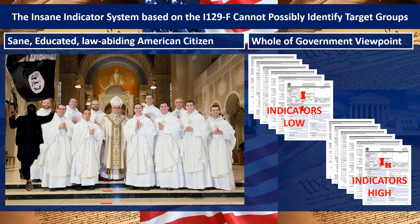On the left, Americans might look at a room and think: there's a group of clergy — maybe a bishop in the middle, priests around him — and then there's a guy on the left holding an ISIS flag who we'd recognize as a terrorist. But the way the government sees it on the right, they see only I-129F packets with low indicators and high indicators. That's all they see.